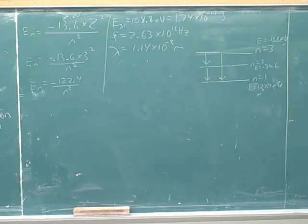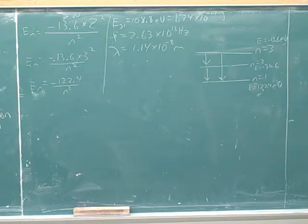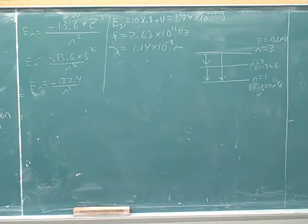Let's go ahead and do the remaining calculations. What did we get for that answer? Go ahead and do the calculation. Was it 1.14? Okay, good. And how many other wavelengths will there be? Two. Okay, I think you got that.